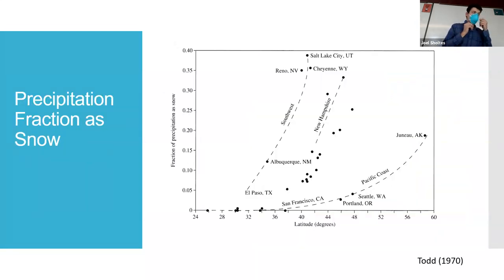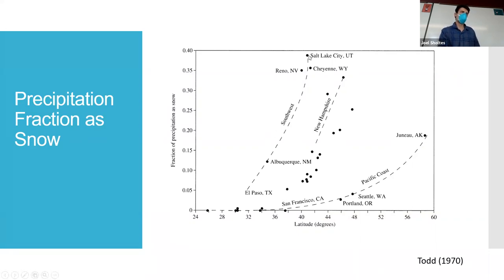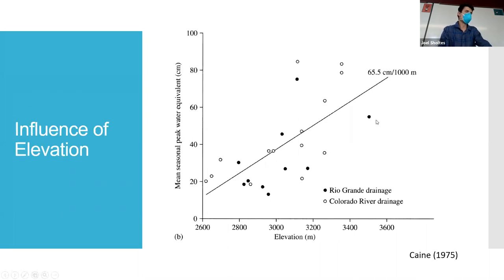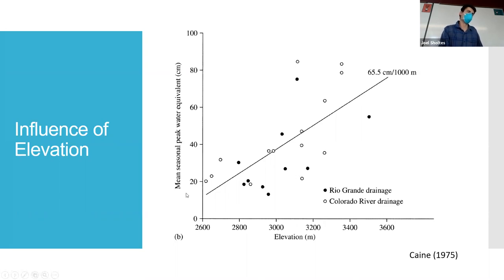We can look at how much precipitation we have over a year and what fraction falls as snow. In the west, up to 40% of precipitation falls as snow; for Salt Lake and New Mexico, a little bit less. It's partly a function of latitude — the further north you go, the more falls as snow. And elevation is really important, as we saw from the map.